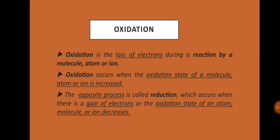Oxidation is the loss of electrons during a reaction by a molecule, atom, or ion. The oxidation state of the molecule, atom, or ion is increased. The opposite process is called reduction, which occurs when there is a gain of electrons or the oxidation state decreases. Oxidation doesn't necessarily have anything to do with oxygen. For example, hydrogen and fluorine gas form hydrofluoric acid: H₂ + F₂ → 2HF. In this reaction, hydrogen is being oxidized and fluorine is being reduced. Note that there is no oxygen anywhere in this reaction.